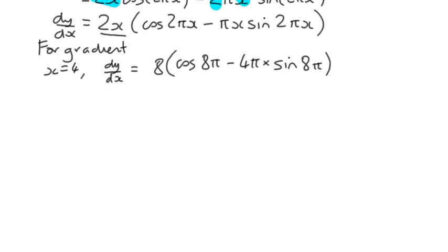So what can we do to evaluate that? We know that 8π is a multiple of 2π. In other words, when we're doing a quadrant diagram, we think of 0 all the way around to pi, which is 180, all the way around to 2π. 2π is actually 360 degrees.